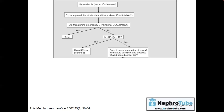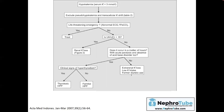If the hypokalemia occurs within hours — especially if there is acute muscle paralysis in the absence of an acid-base disorder — check the patient's thyroid profile. If the patient has laboratory parameters of hyperthyroidism, the diagnosis is thyrotoxic hypokalemic periodic paralysis. If not, the patient will be diagnosed as familial hypokalemic periodic paralysis.